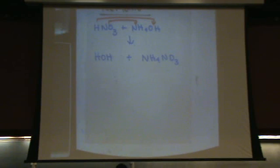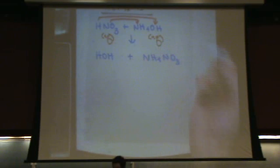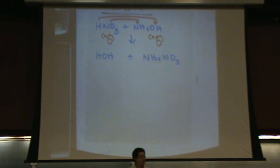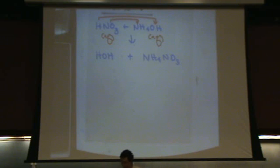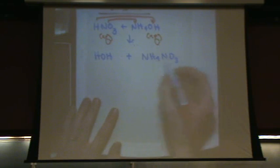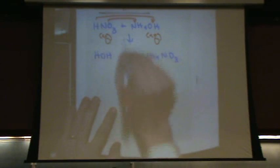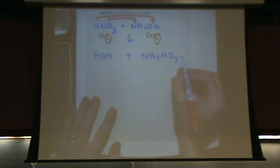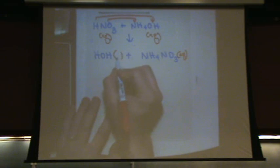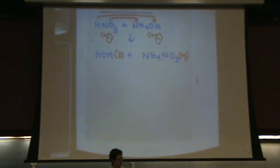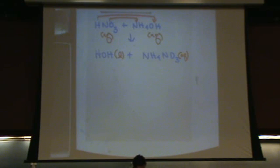That means they're both aqueous, so we'll write AQ for both. Another way you could have known that is I said they got mixed — if you mix them in solution, they have to be aqueous. Both ammonium and nitrate ions are aqueous; this product is also aqueous. How about water? Water is a liquid — I hope you know that.